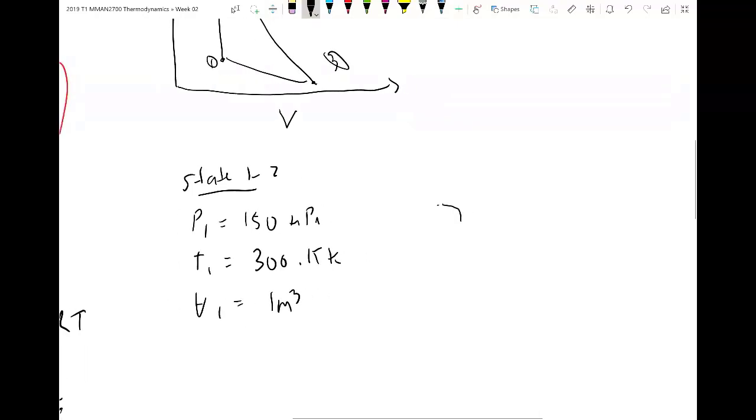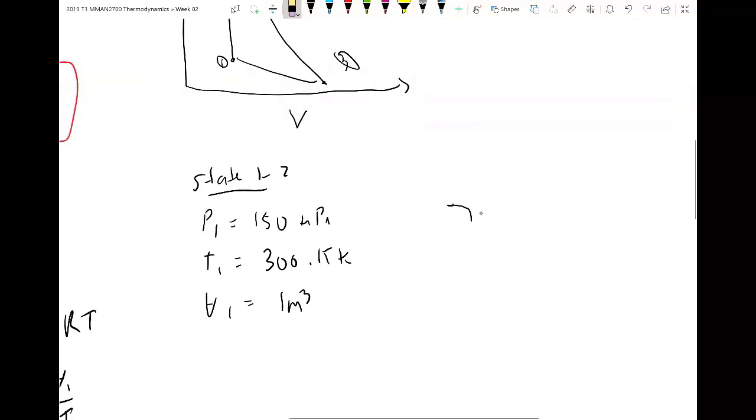So then we go to pressure 2, we're given as 1,500 kPa, T2 we're not given, and the volume 2, because it's an isochoric process, will be the same, 0.1.